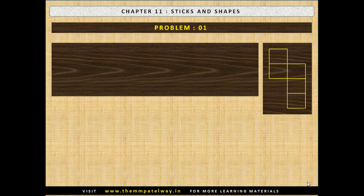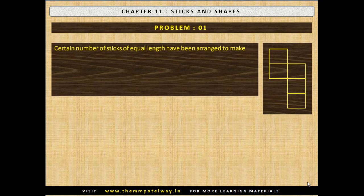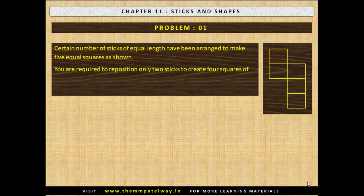Problem number 1: A certain number of sticks of equal length have been arranged to make 5 equal squares as shown. You are required to reposition only two sticks to create 4 squares of the same size. You have to ensure use of all the sticks.